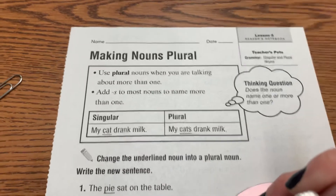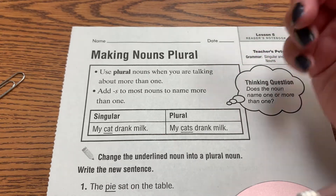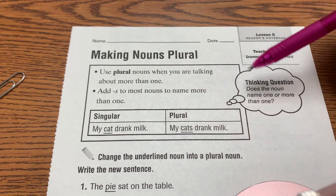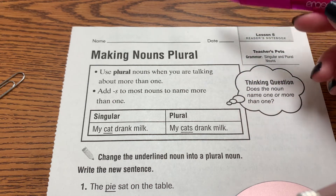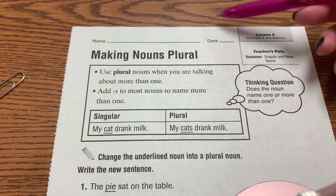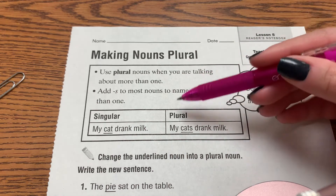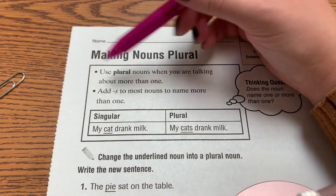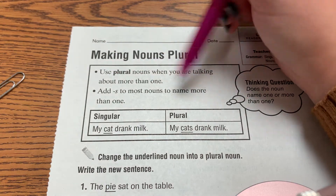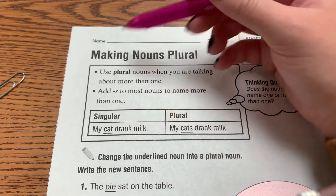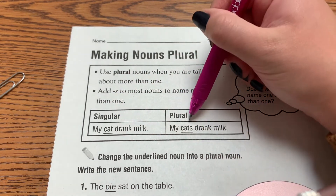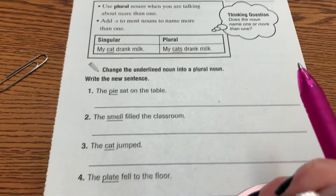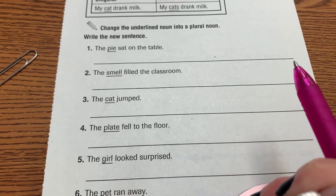Page 65 — we are making nouns plural. We have a singular noun, and we're adding S on all of these. We don't always add S to make nouns plural; sometimes we change the whole word, sometimes we add ES, but for all of these they follow the rule where we just add S. Use plural nouns when you're talking about more than one. My cat drank milk — singular. My cats drank milk — cats is plural, which means more than one.